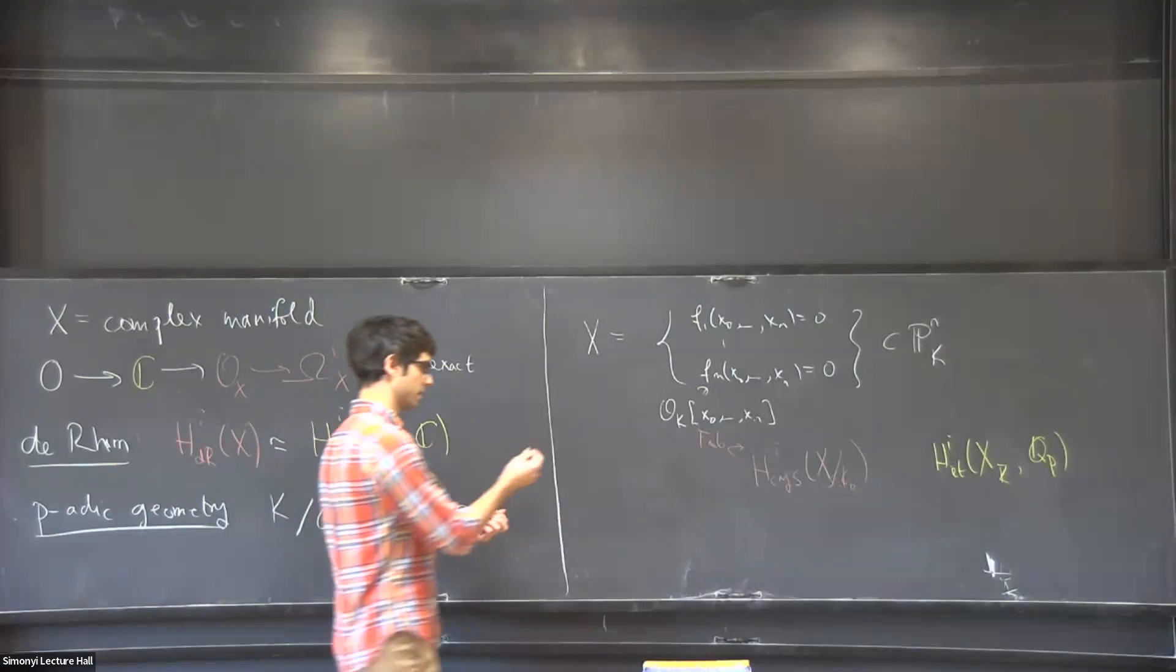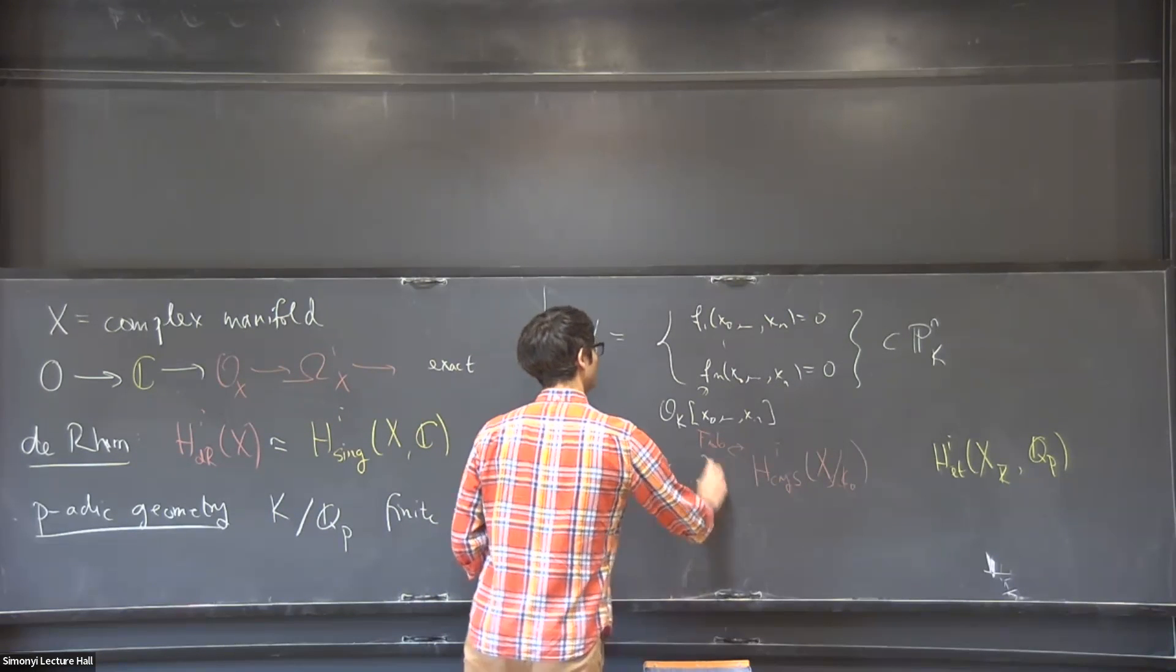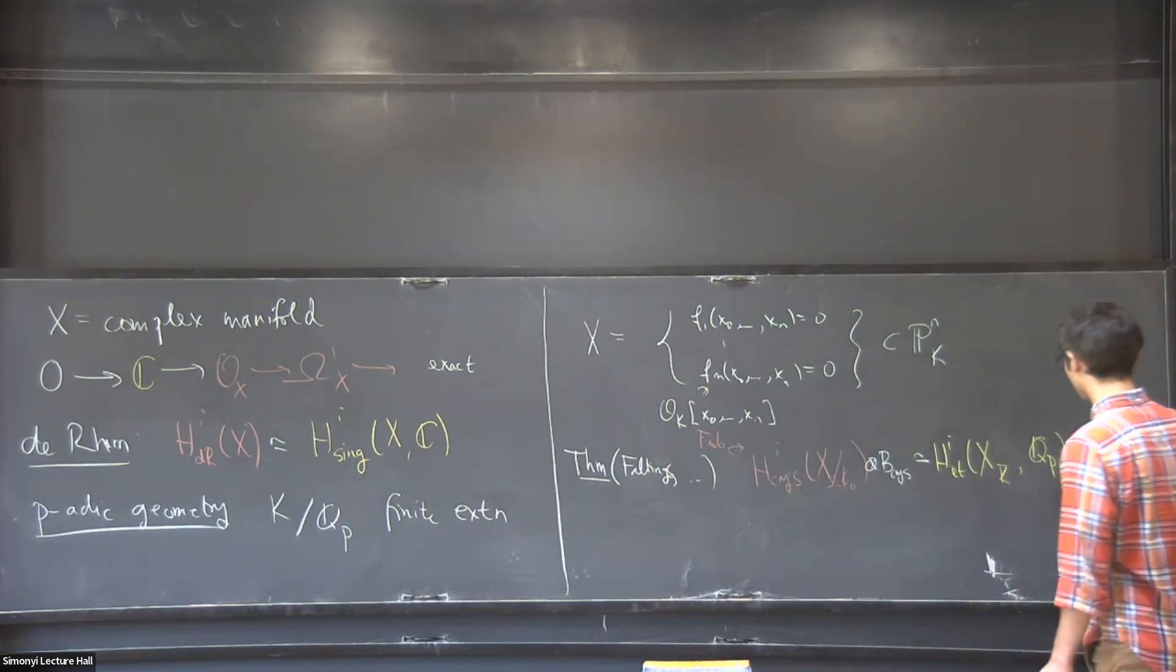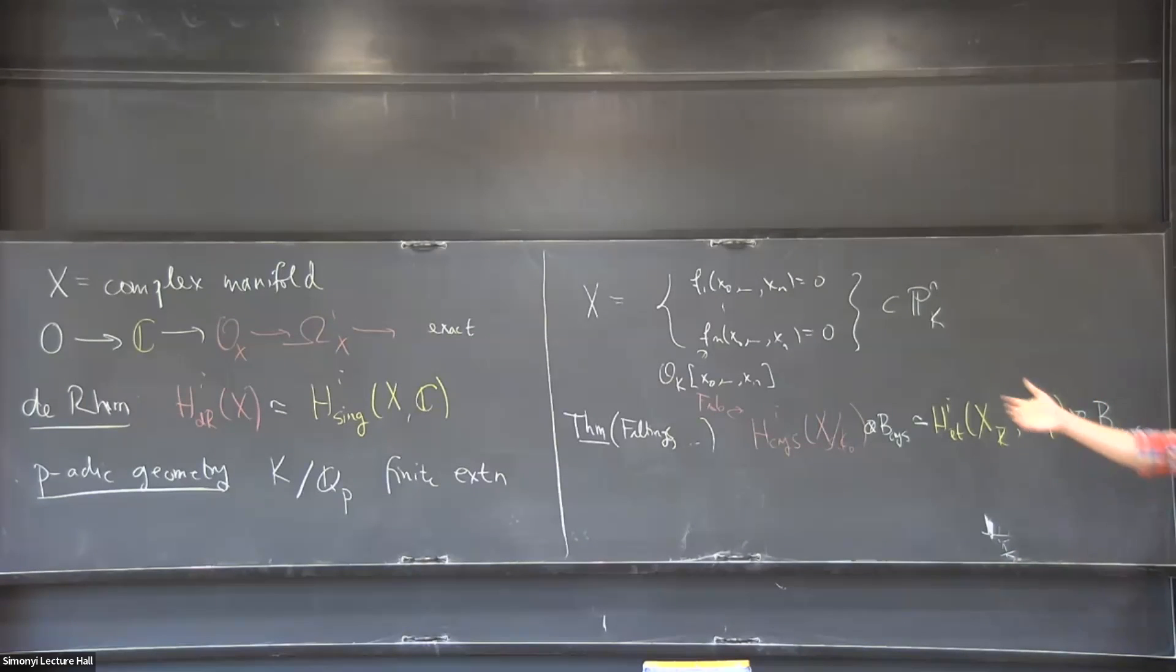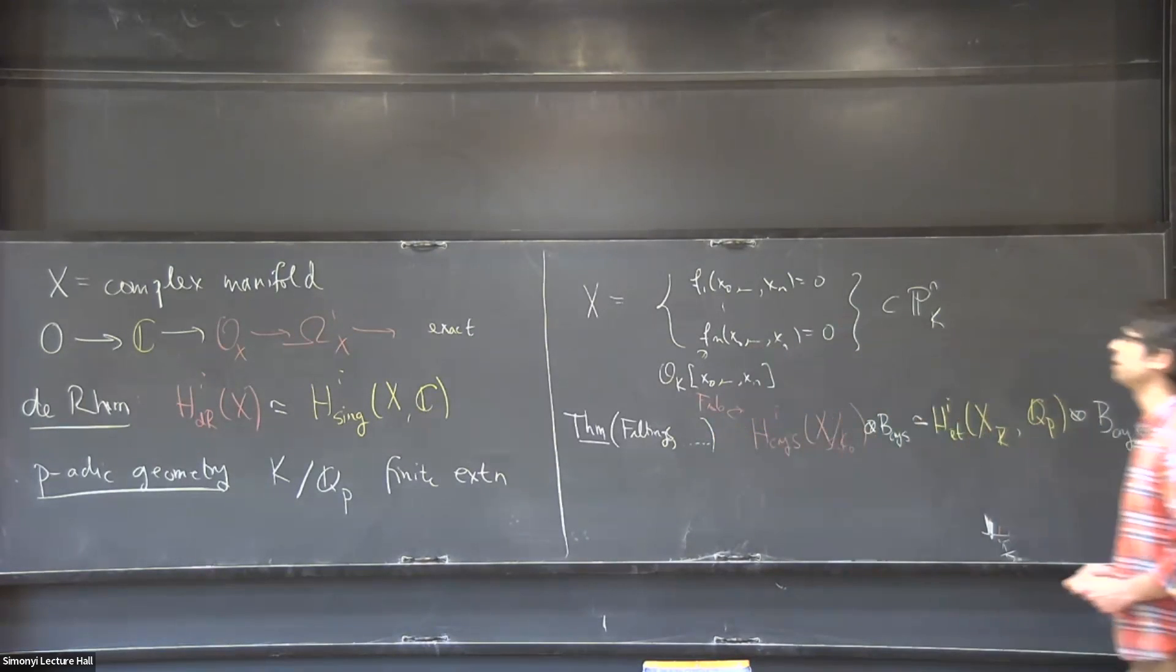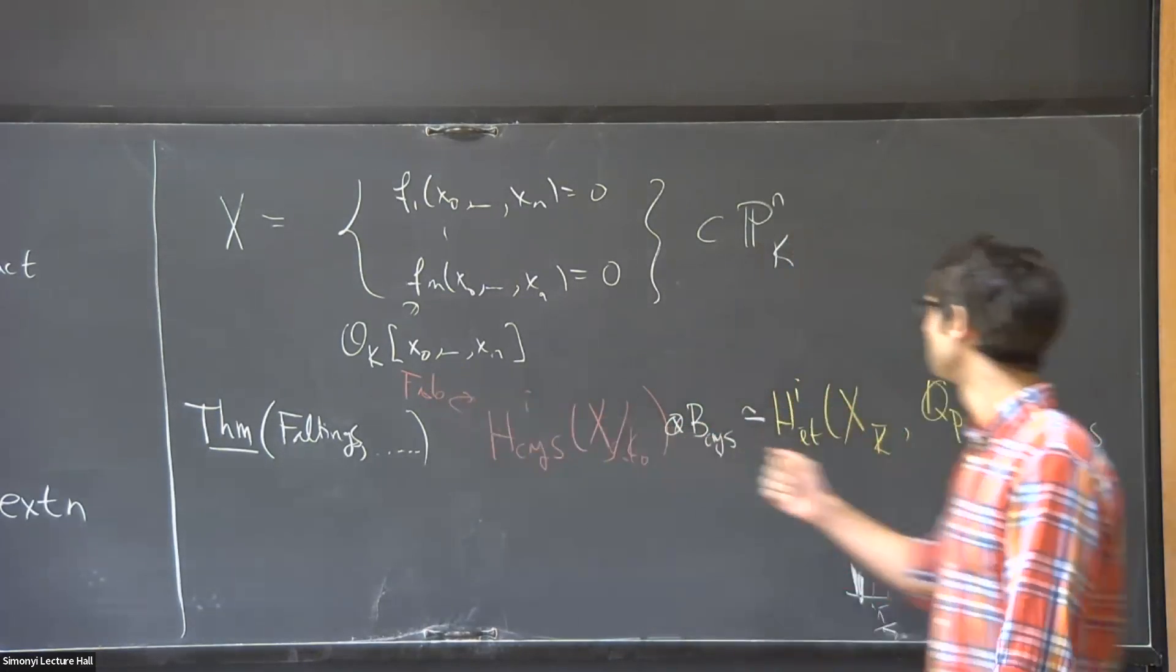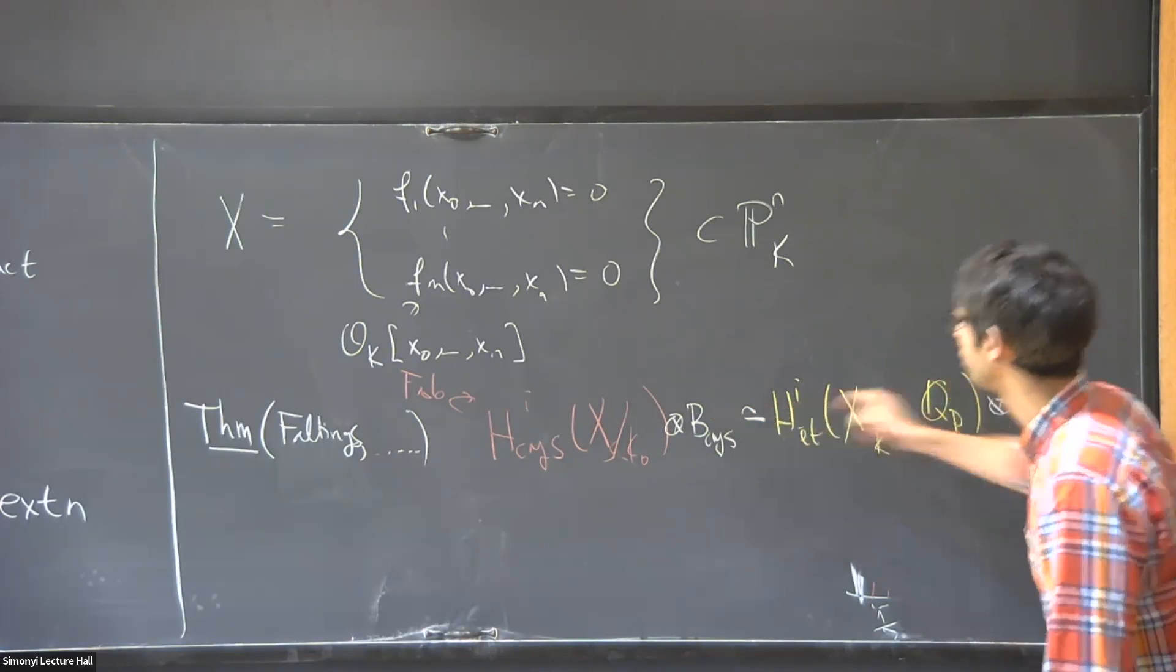And so the theorem of Faltings tells us that these two groups are still isomorphic once we tensor out with some other ring. So this ring should contain something like 2πi that we already needed over here to define this isomorphism. And this was already conjectured by Grothendieck and Fontaine, and has since been reproved many, many times, so there should be a lot more dots here. And one very nice thing about this theorem is that there's again a lot of extra structures on both sides. So here we have this Hodge filtration, we have the Frobenius, on this side we have an action of the Galois group of k-bar over k. And one can actually also put similar structures on this ring B_cris. And then it turns out that this isomorphism preserves all this structure.